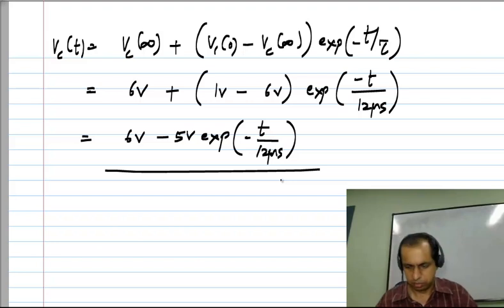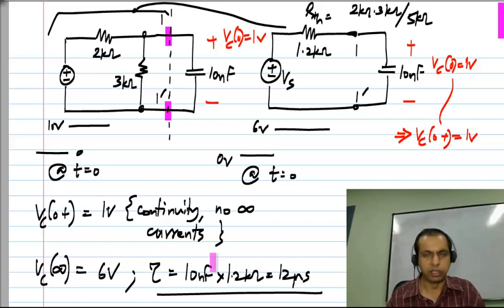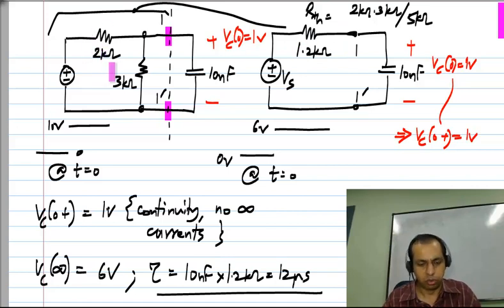And you can do this in many ways. Basically, the point is to be able to identify the time constant and the initial and final values. Now, even if you did not reduce it to the Thevenin equivalent, you had this circuit and wrote the differential equation for this circuit, you would get exactly the same answer and exactly the same differential equation of course, in terms of the capacitor voltage VC.